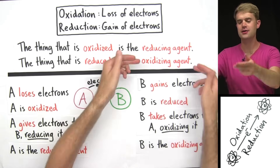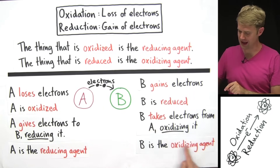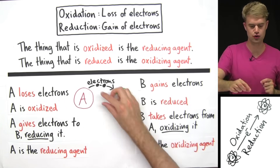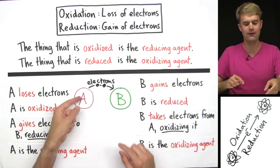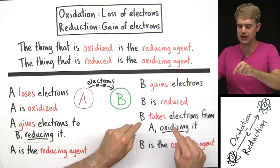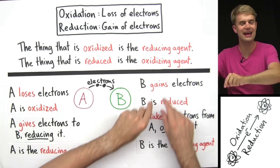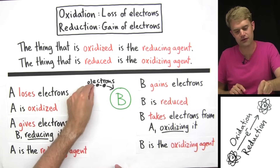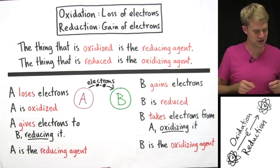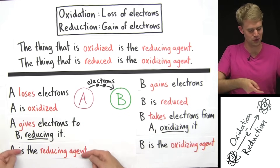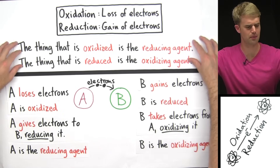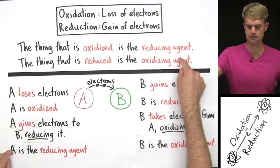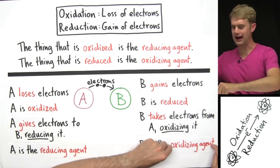So that's everything that you need to know about oxidizing agents and reducing agents. The oxidizing agent allows oxidation to take place, so it takes electrons from the atom or compound that is being oxidized — the oxidizing agent itself is reduced and it gains electrons. The reducing agent allows reduction to take place by giving electrons to the thing that is going to be reduced — so it itself is losing electrons, and the reducing agent is oxidized. It's also useful to remember that the thing that is oxidized is the reducing agent, and the thing that is reduced is the oxidizing agent.